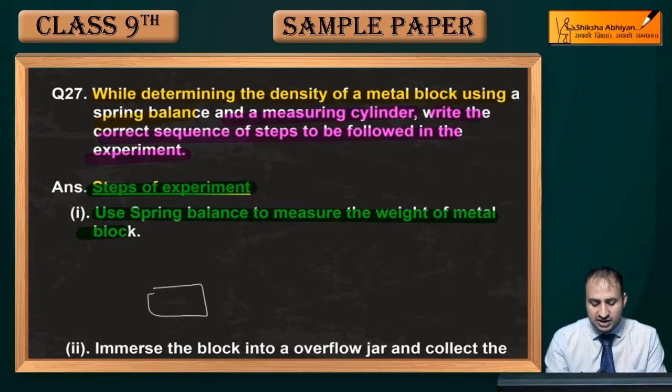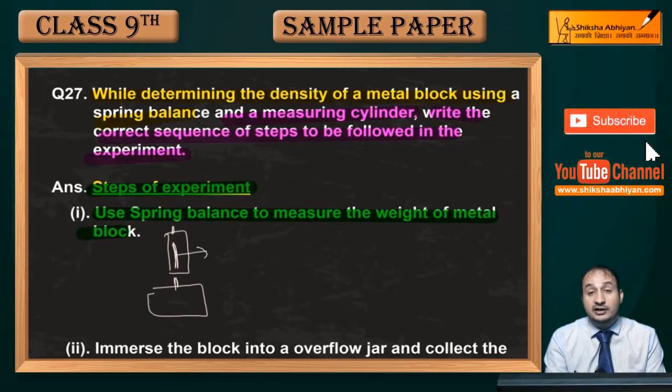Here you can see a metal block. This metal block, you need to use the spring balance. You need to see what the reading is. Then what it needs to be - it needs to be the weight.